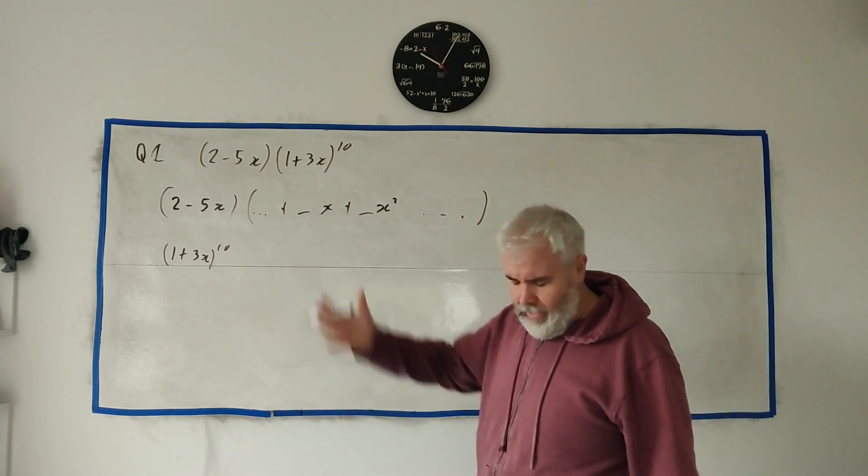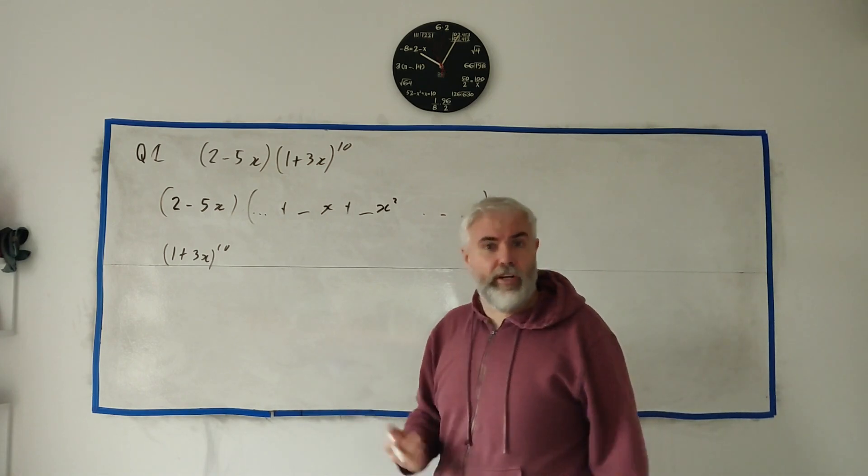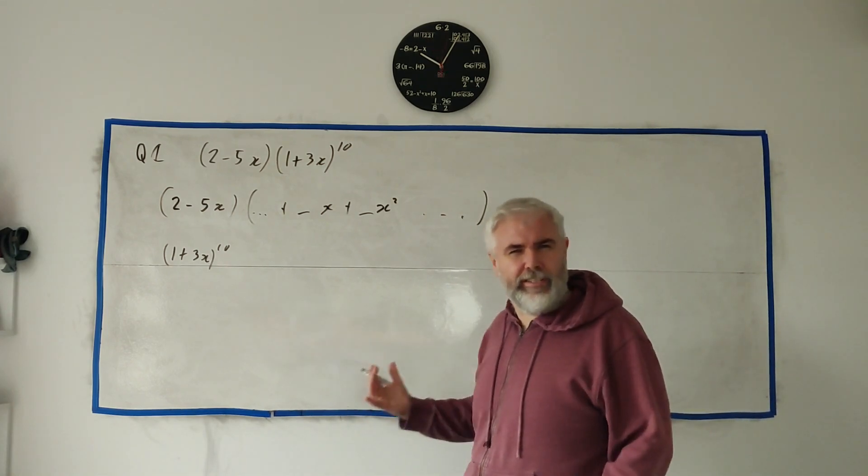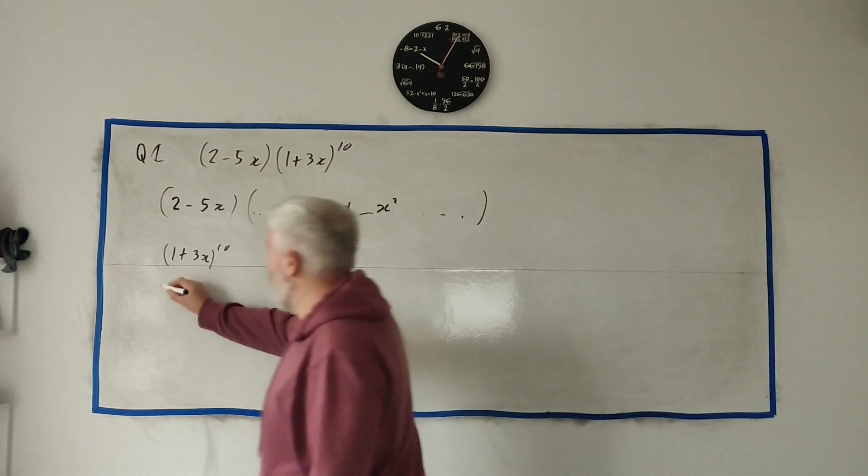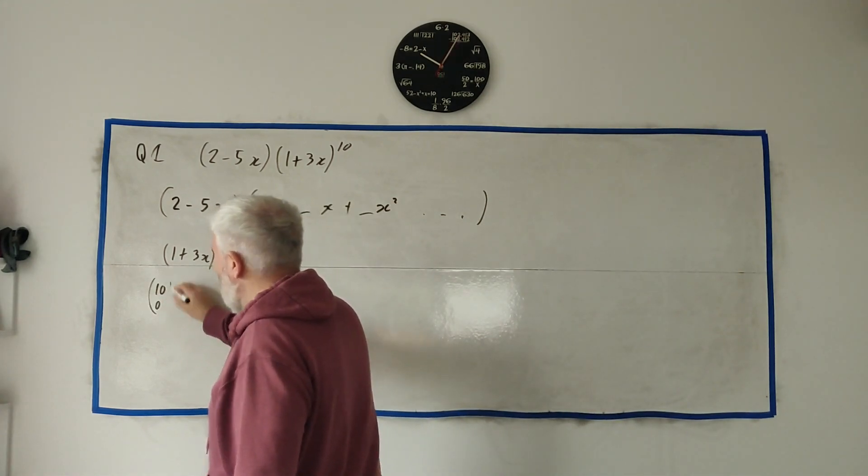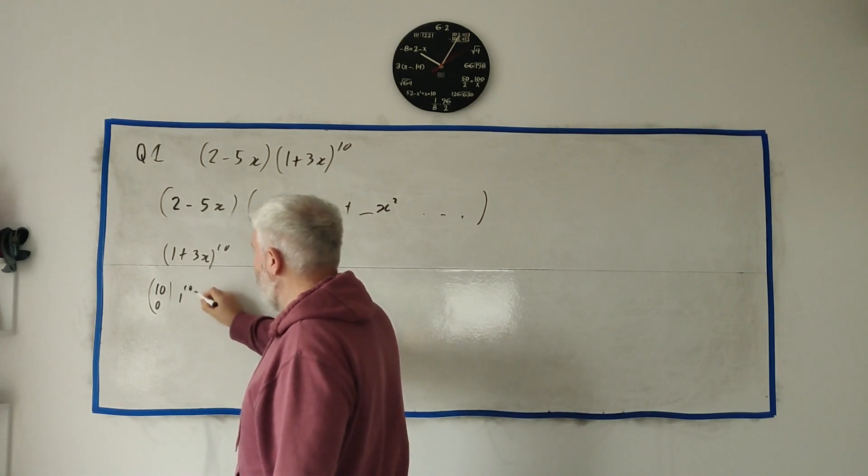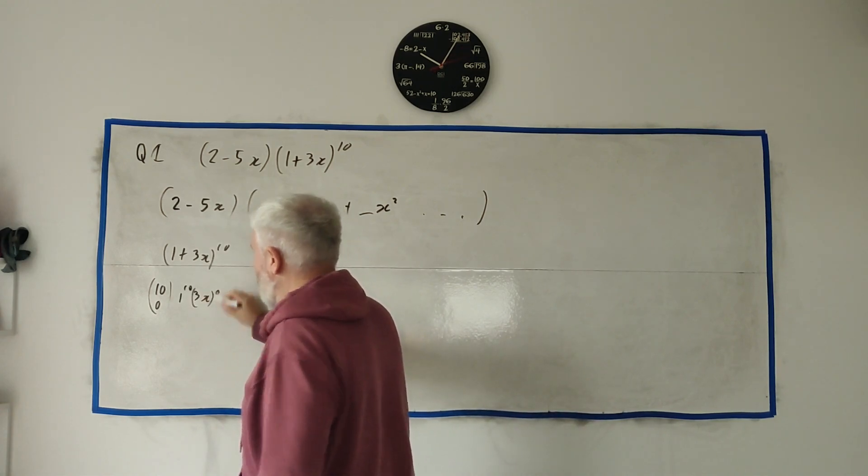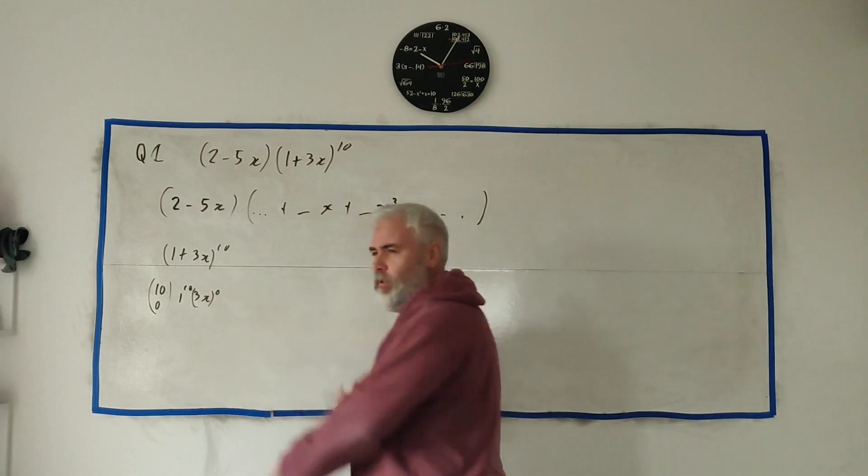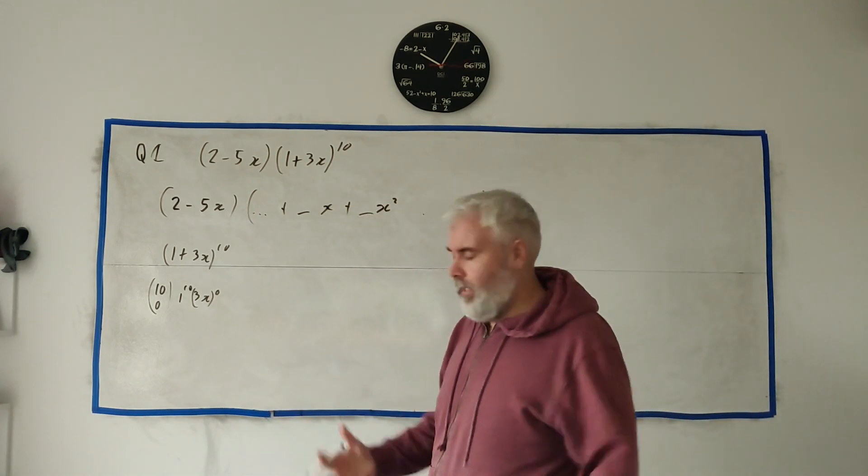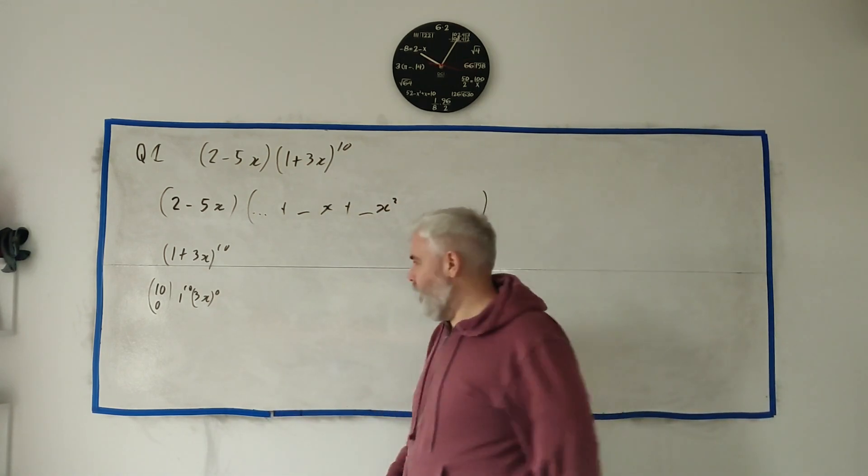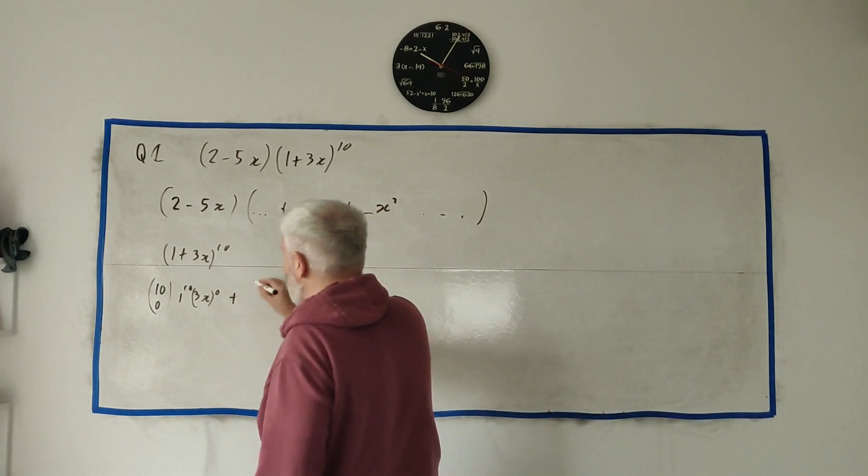So let's use the binomial expansion on this to find both of these terms. I'll start with the zero term even though we're not going to use it, just so you can see the whole pattern. That's 10 choose 0, with 1 to the power of 10, 3x to the power of 0. Again that's not written in your formulas, but sometimes you'll see it in the more complete formula. And the next term is 10 choose 1.